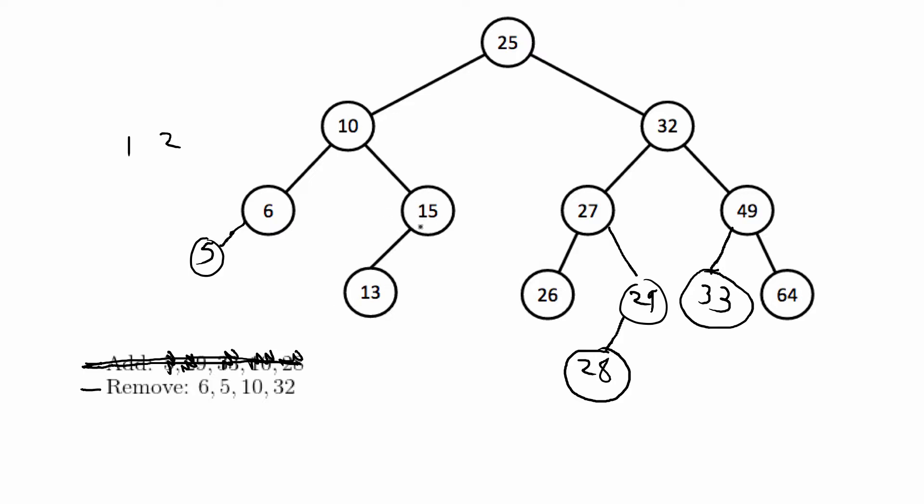For example if we needed to remove 15 what you do in that case is you just bump up the one child to the parent node's location so if you're removing the parent node 15 you would just remove 15 and then move up 13 to this location. And then the third case is when you remove a parent node that has two children.